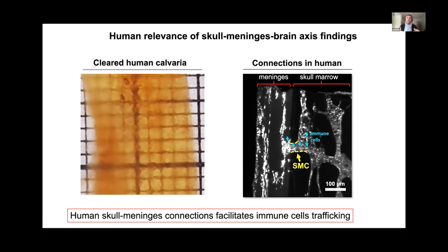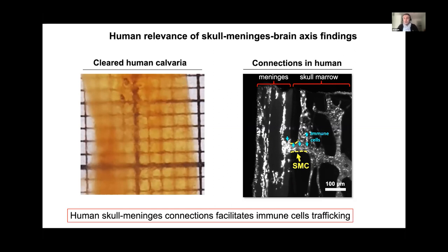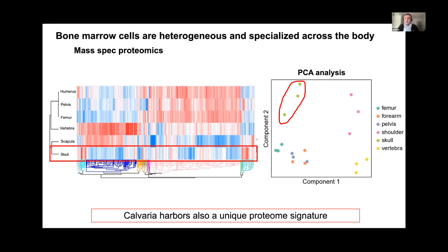We asked whether the skull is functionally different from other bones. Immunologists typically refer to 'bone marrow' without distinguishing skull bone marrow from femur bone marrow, as if they're the same — but they're not. We performed transcriptomic and proteomic studies comparing different bones. In PCA plots across eight to ten thousand proteins, skull bone marrow clusters completely by itself, indicating something distinct happening there in terms of brain-related function.